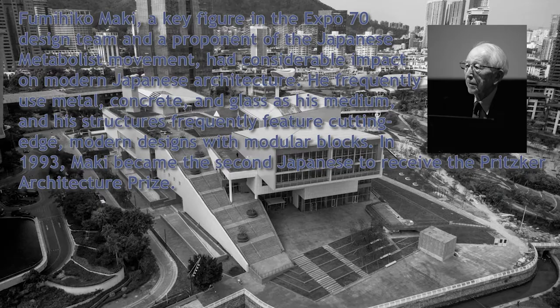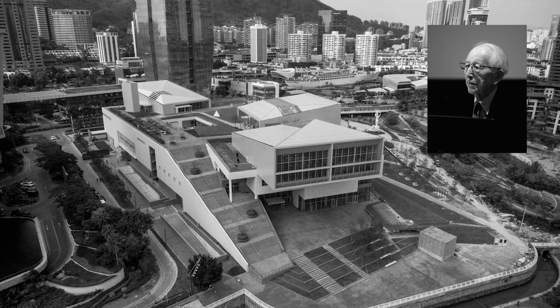Fumihiko Maki is a key figure in the Expo 70 design team and a proponent of the Japanese metabolism movement, with considerable impact on modern Japanese architecture. He frequently used metal, concrete, and glass as his media, and his structures frequently feature cutting-edge modern design with modular blocks. In 1993, Maki became the second Japanese architect to receive the Pritzker Architecture Prize. His famous works include Makuhari Messe, the Museum of Modern Art in Kyoto, and the Shimane Museum of Ancient Izumo.